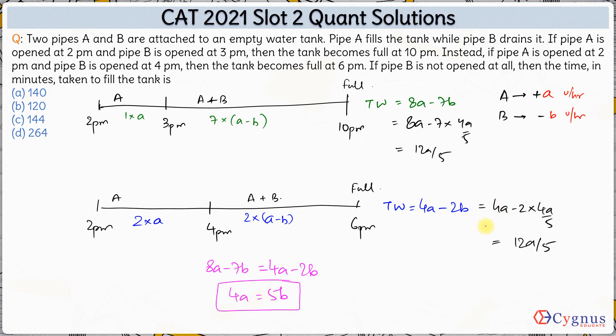So the final question here is what is the time taken if B is not opened at all. If B is not opened at all that means we have to effectively calculate the time taken by A. So the time taken by A will be work to be done which is 12A by 5 units divided by efficiency of A. So this comes out to be 12 by 5 hours. 12 by 5 hours is effectively 12 by 5 into 60 minutes which is 12 into 12, 144 minutes. So time taken by A alone is 144 minutes which is option C over here. Okay, so that is it for this question. Thank you.